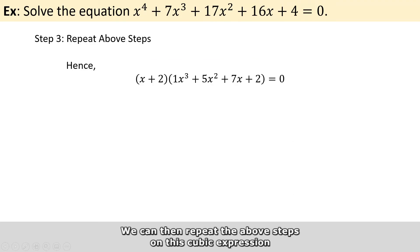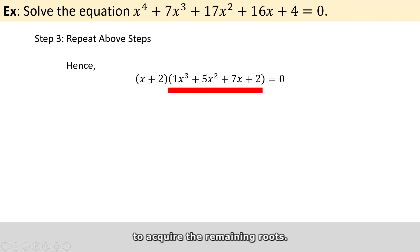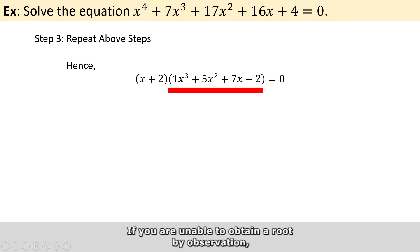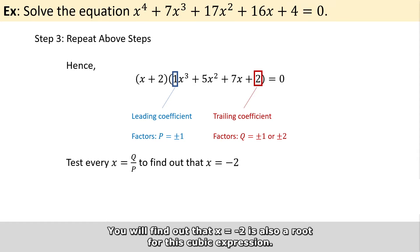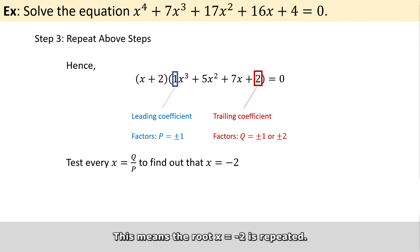We can then repeat the above steps on this cubic expression to acquire the remaining roots. If you are unable to obtain a root by observation, you can always try the rational root test again. You will find out that x equals minus 2 is also a root for this cubic expression. This means the root x equals minus 2 is actually repeated.